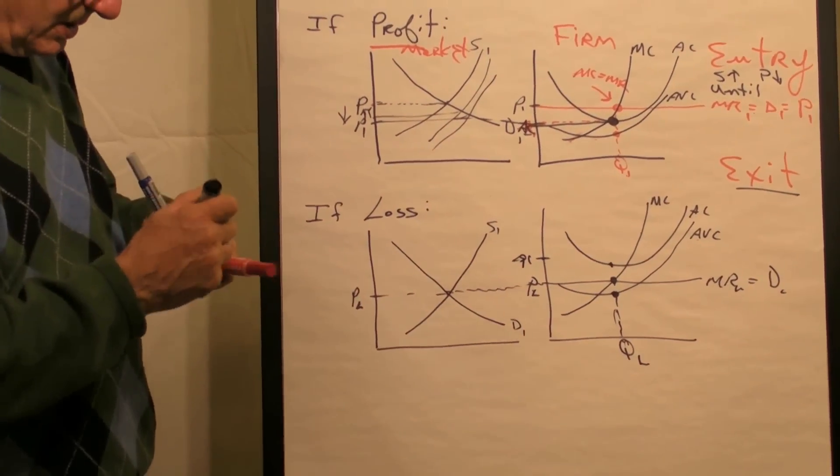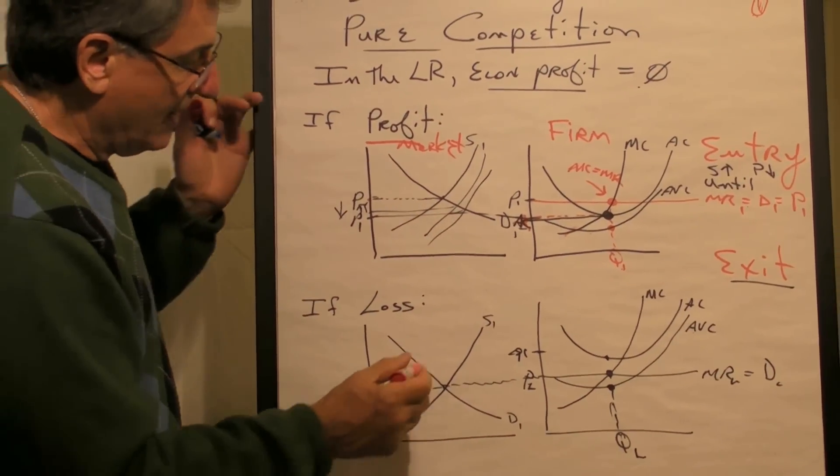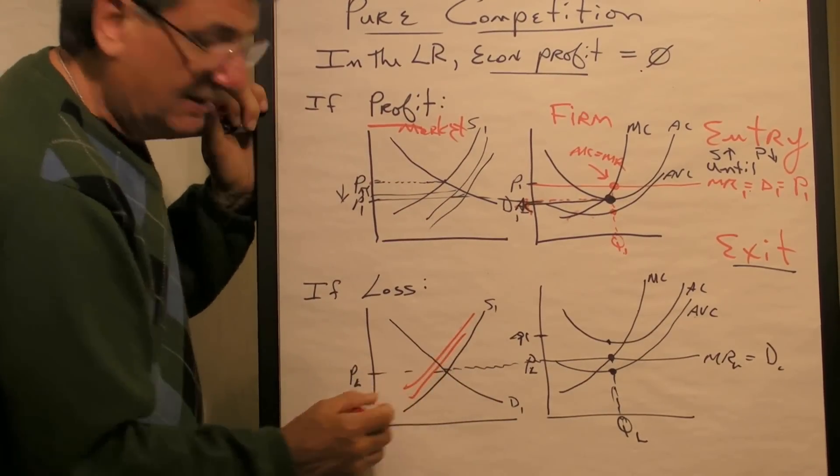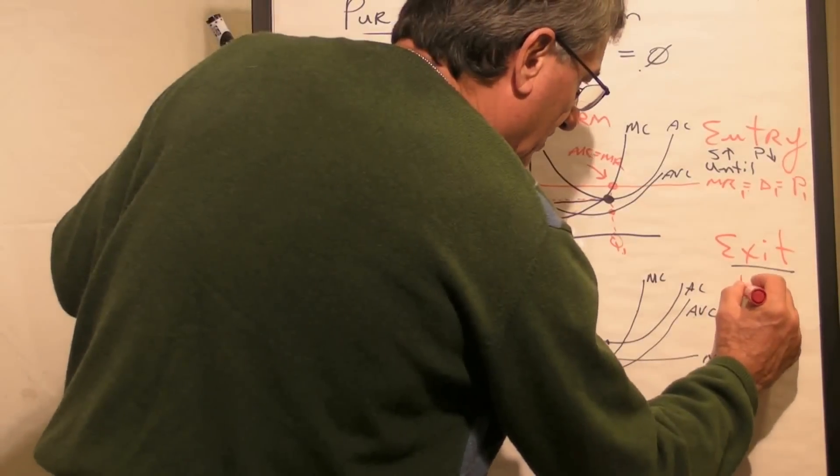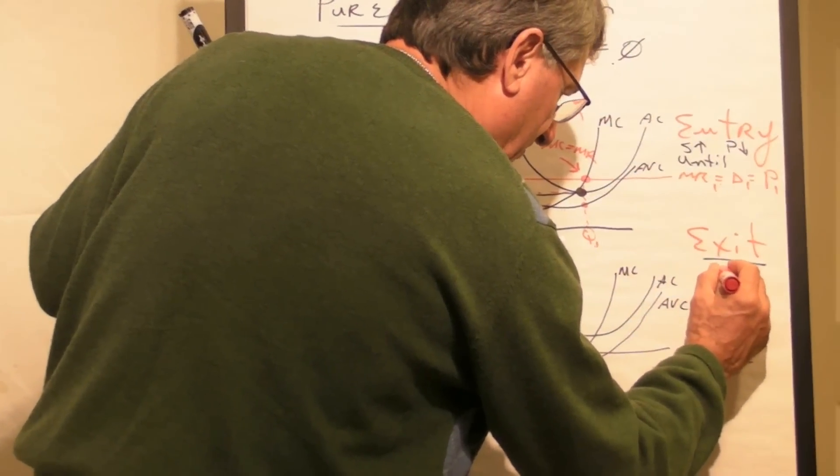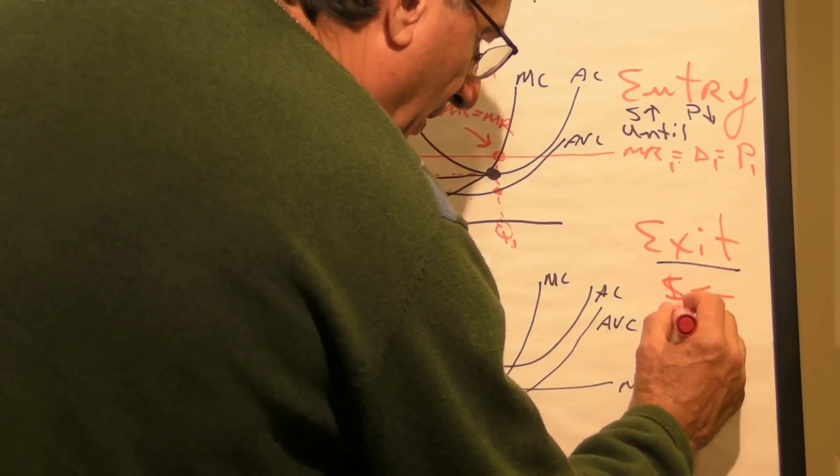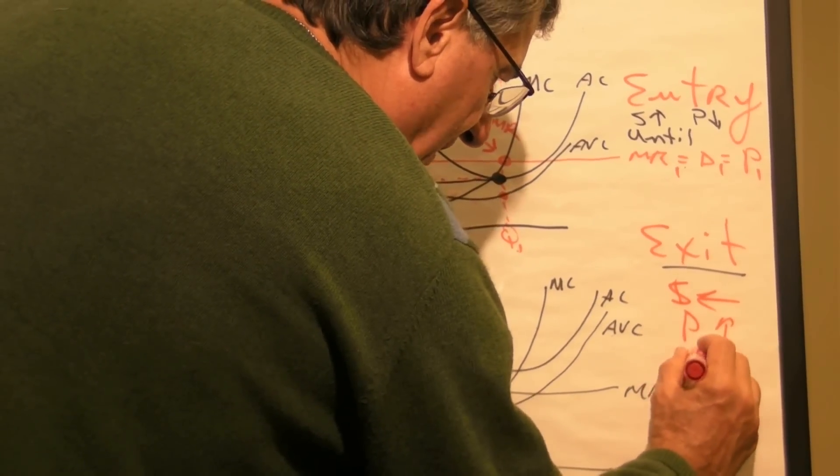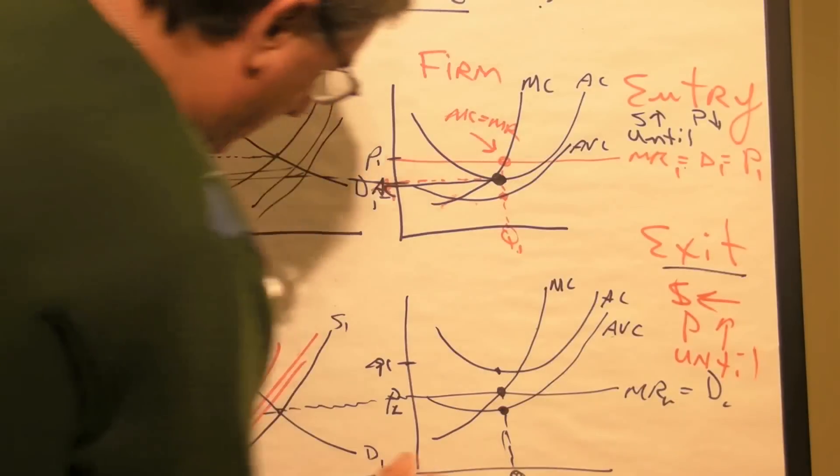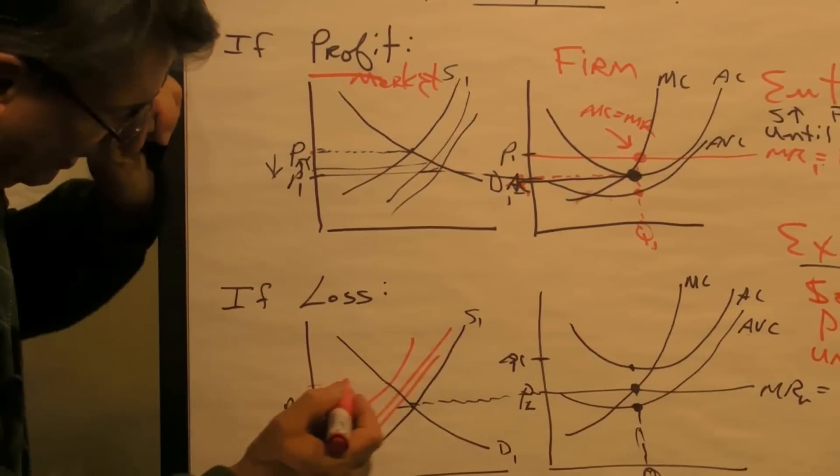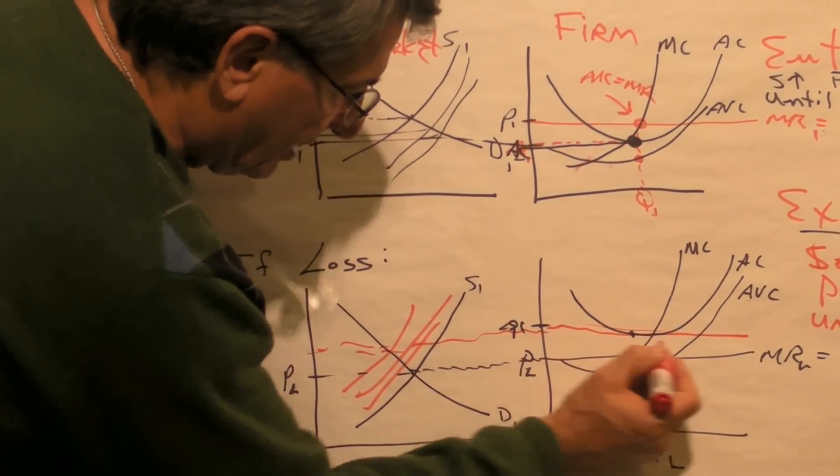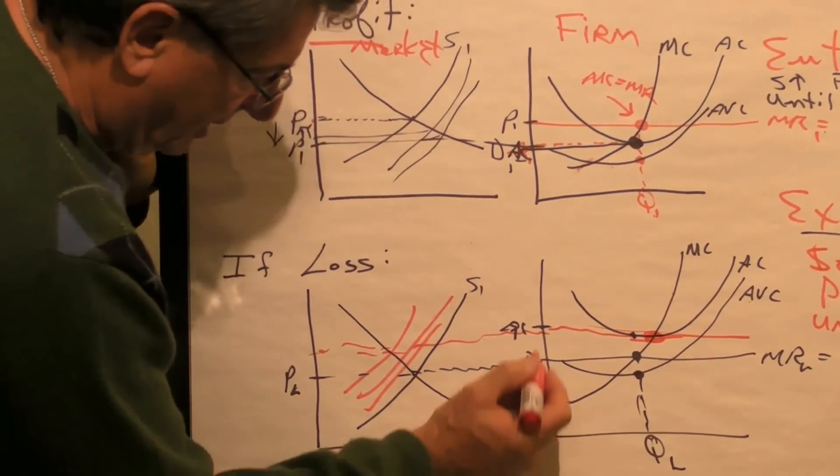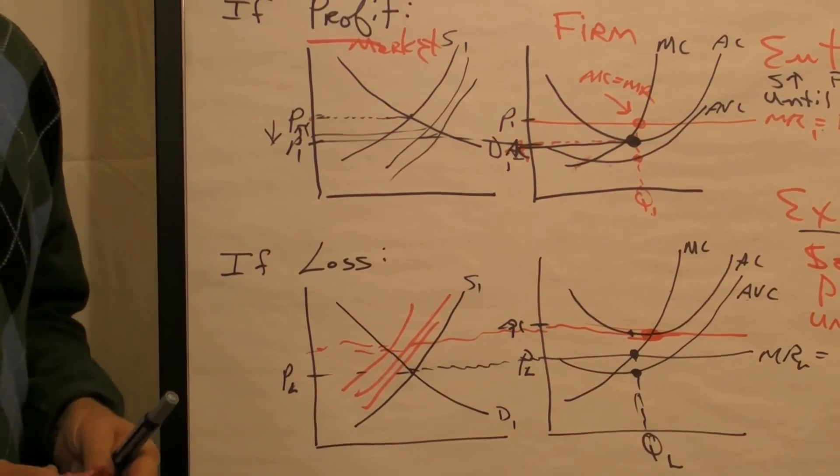Now when loss occurs, what happens is some firms exit. And when they exit, the supply goes down—supply shifts to the left—the price goes up until the losses disappear. And the losses disappear when the price is equal to the minimum point of average cost here, and the profits are zero.